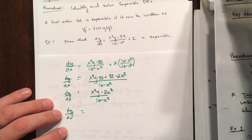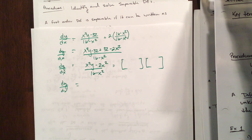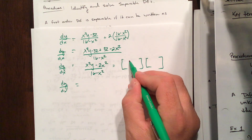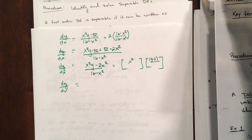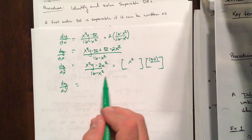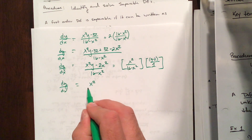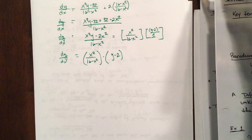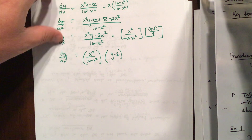Now I want to isolate all the x's and all the y's. Notice there is an x squared in common in the numerator terms — factor that out, leaving y minus 2. So we have x squared over 16 minus x squared times y minus 2. We were able to write the differential equation as a product of a function entirely in x and a function entirely in y.